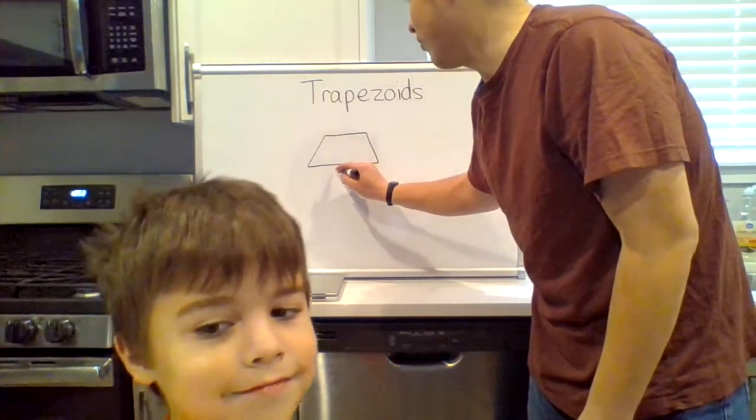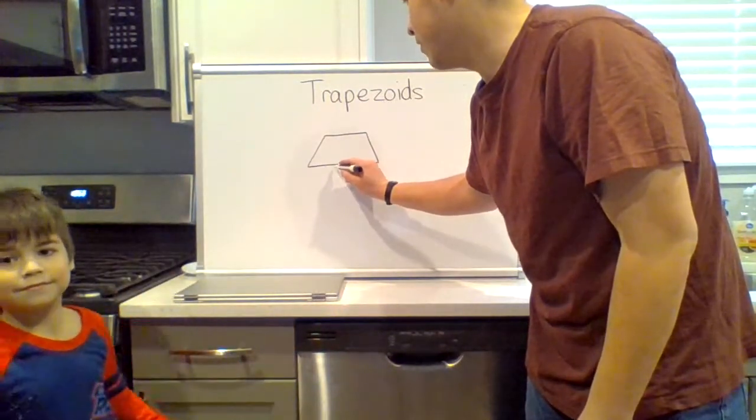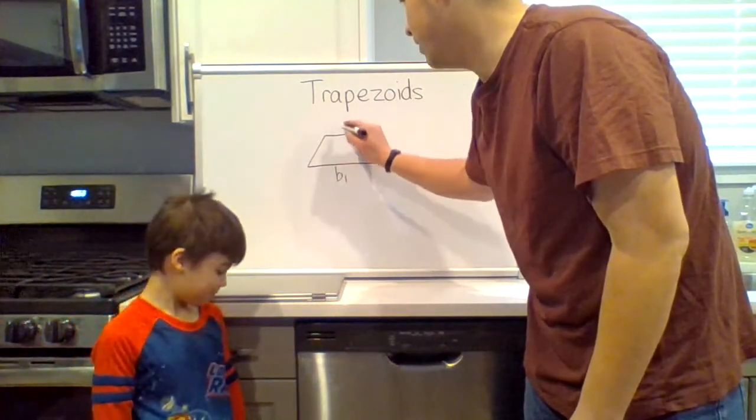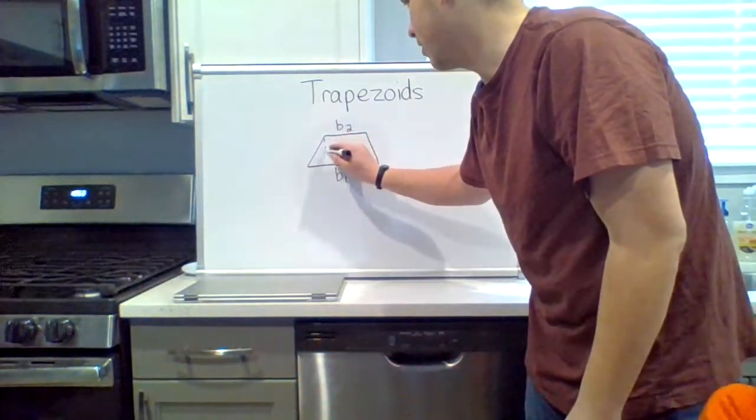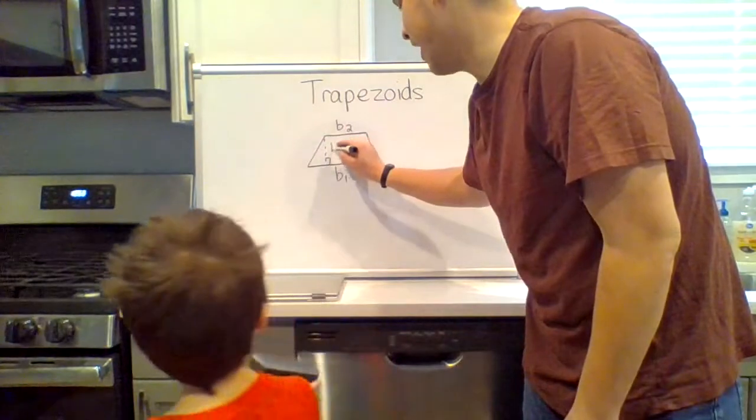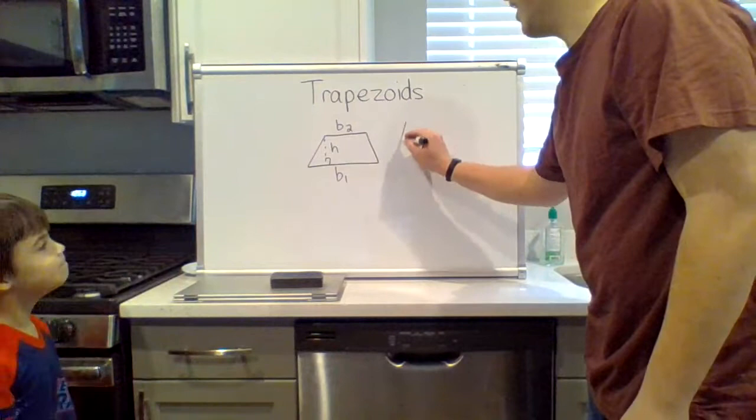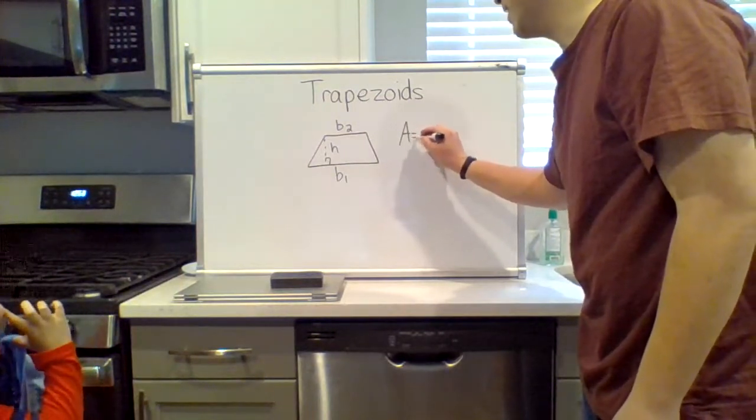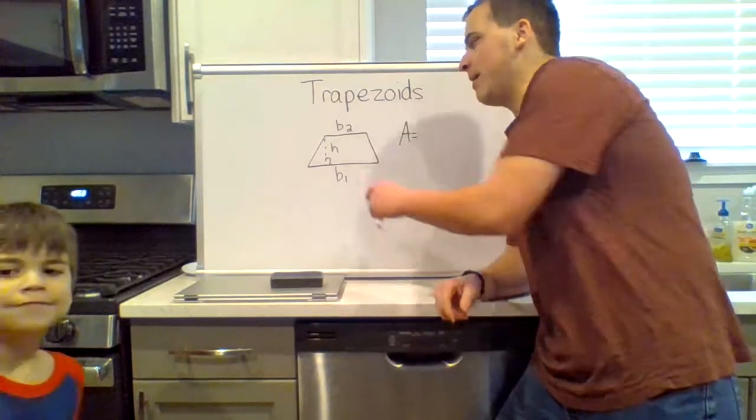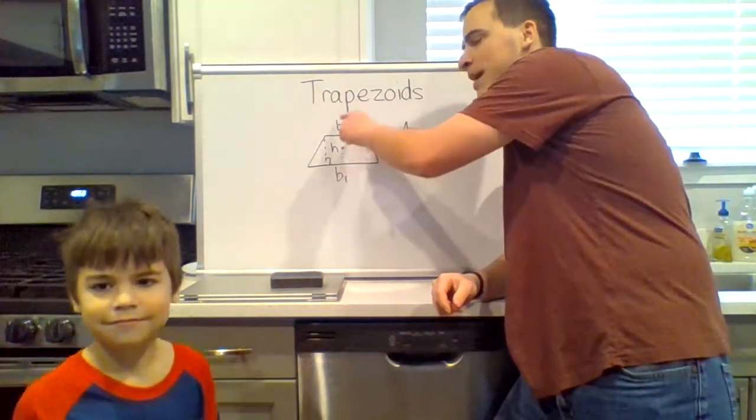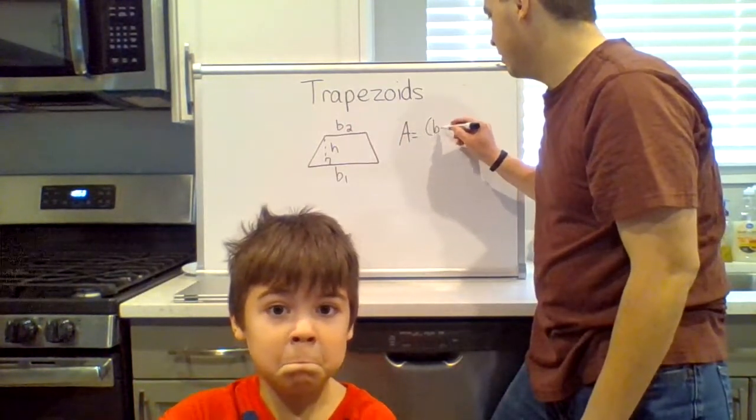In a trapezoid there are two bases, the top and bottom. We call it base one and base two. There's a height. The area of a trapezoid is given by just like a rectangle where base times height, but now we have two bases of various sizes. So broadly speaking, we do the average of the two then multiply by the height.